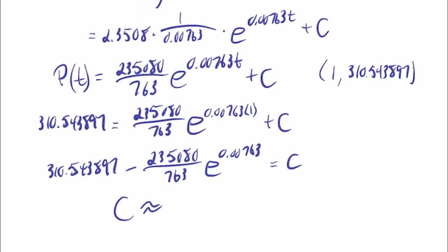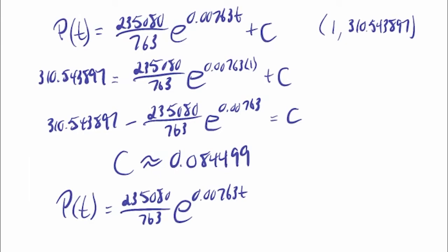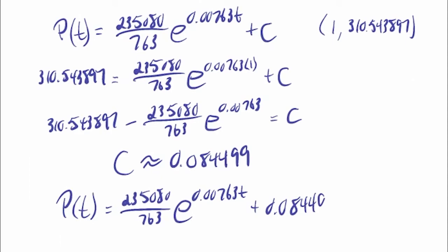Solving for C by subtracting that exponential term from both sides and computing with a calculator, I get C ≈ 0.0084499. So P(T) = (235080/763)e^(0.00763T) + 0.0084499. You might wonder if that tiny C matters — but remember, this is in millions of people. So 0.0084499 million is almost 85,000 people. That's not negligible.